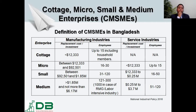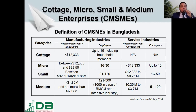The second category is micro, ranging from 12,000 to 92,000 US dollars in investment, with 16 to 30 employees in the manufacturing sector, and up to 15 employees with investment starting at 12,000 dollars in the service sector. Companies with investment between 92,000 and 1.85 million dollars and 31 to 120 employees are classified as small in manufacturing, and 16 to 50 in services. For medium industry, investment ranges from 1.85 million to 6.17 million dollars, with 121 to 300 employees — though for ready-made garments and other labor-intensive industries, this number could be up to 1,000. In the service sector, medium enterprises employ 51 to 120 people.